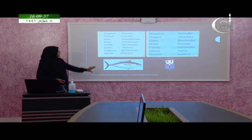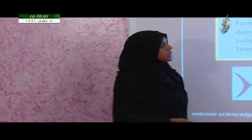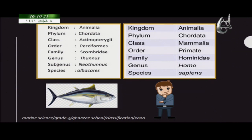One more thing about the scientific name: when writing a scientific name for an organism, the genus name should always start with a capital letter, and the species name should start with a lowercase letter. If you write Homo or Thunnus with a lowercase starting letter, it is wrong.